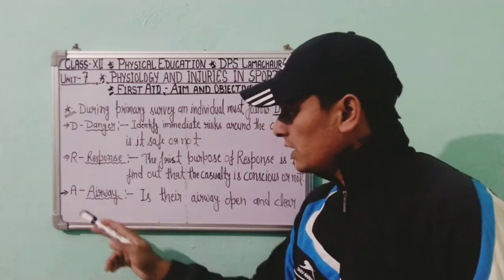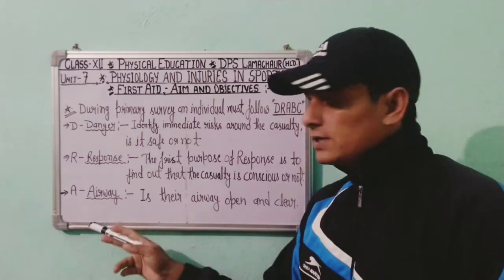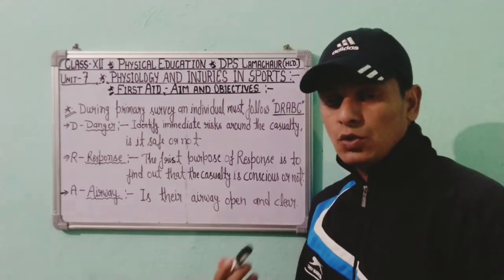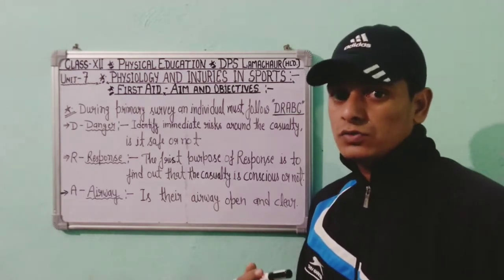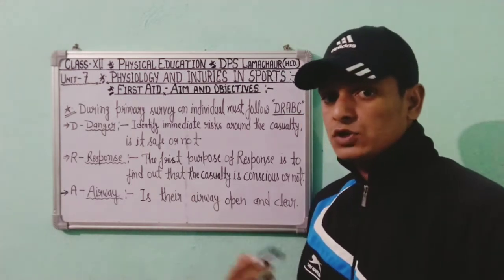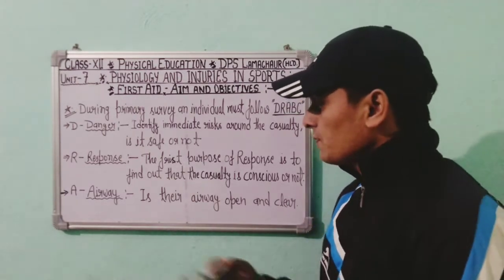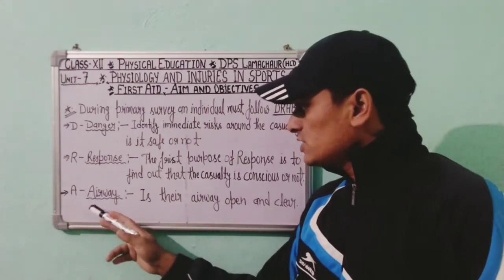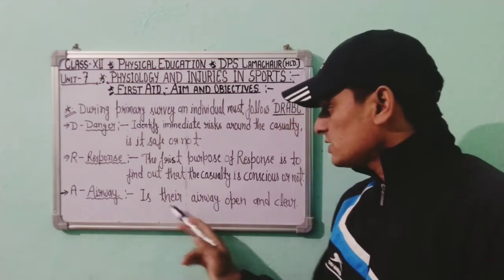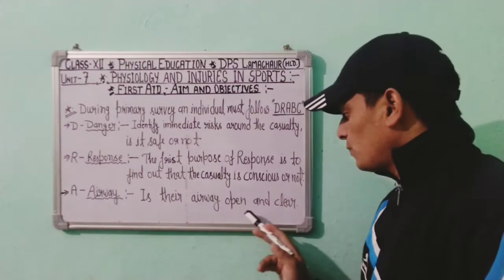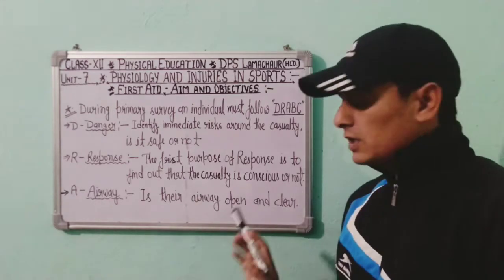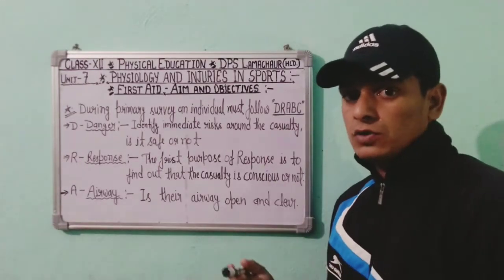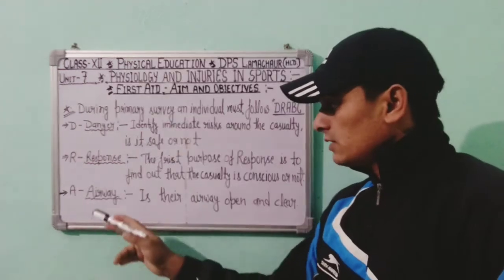The third letter is A, which stands for Airway. Airways in our body are the nose and the mouth. We must check whether the airway is open and clean or not.